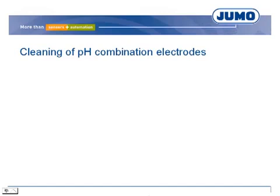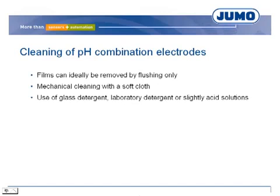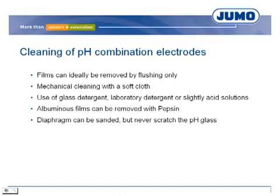When the measurement system shows an error, such as unrealistic values, cleaning the electrode often provides a solution. The best method is flushing the electrode with distilled water, but never store electrodes in distilled water due to desalting. A soft cloth can also be used. For cleaning, glass detergent, laboratory detergent, acetone, alcohol, or slightly acid solutions such as 10% hydrochloric acid can be used. Albuminous films can be removed with pepsin. In case of heavy pollution, the diaphragm can be sanded, but never scratch the pH glass and never use abrasive detergent. After cleaning, the electrode must be flushed with distilled water and a calibration must be executed.